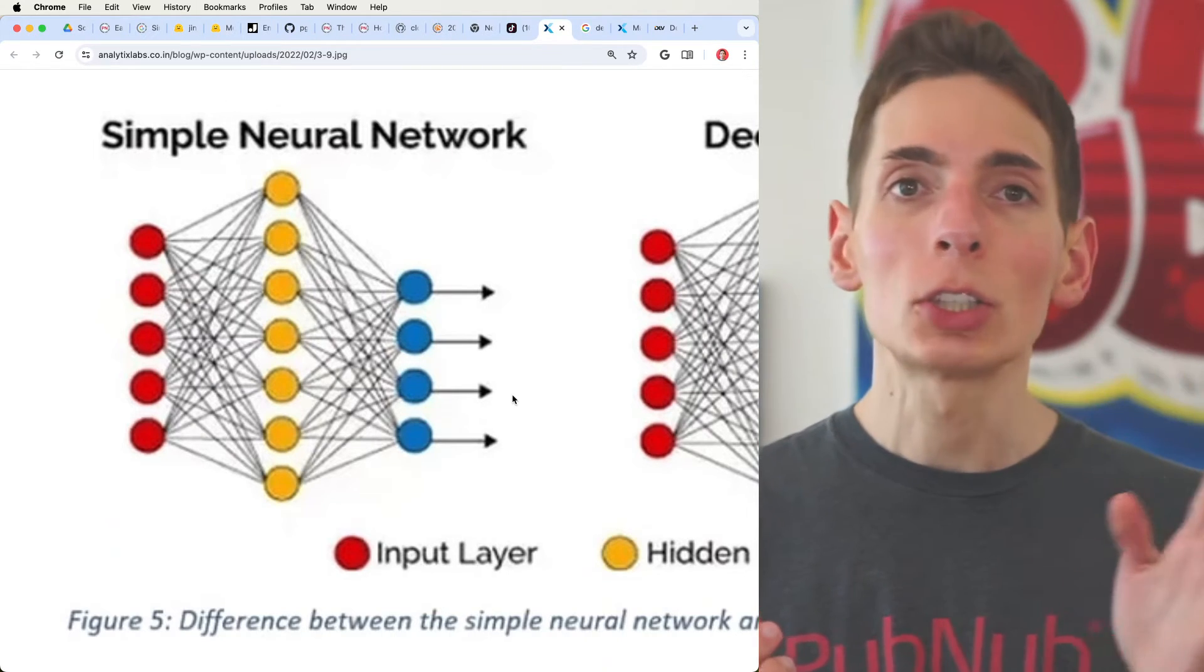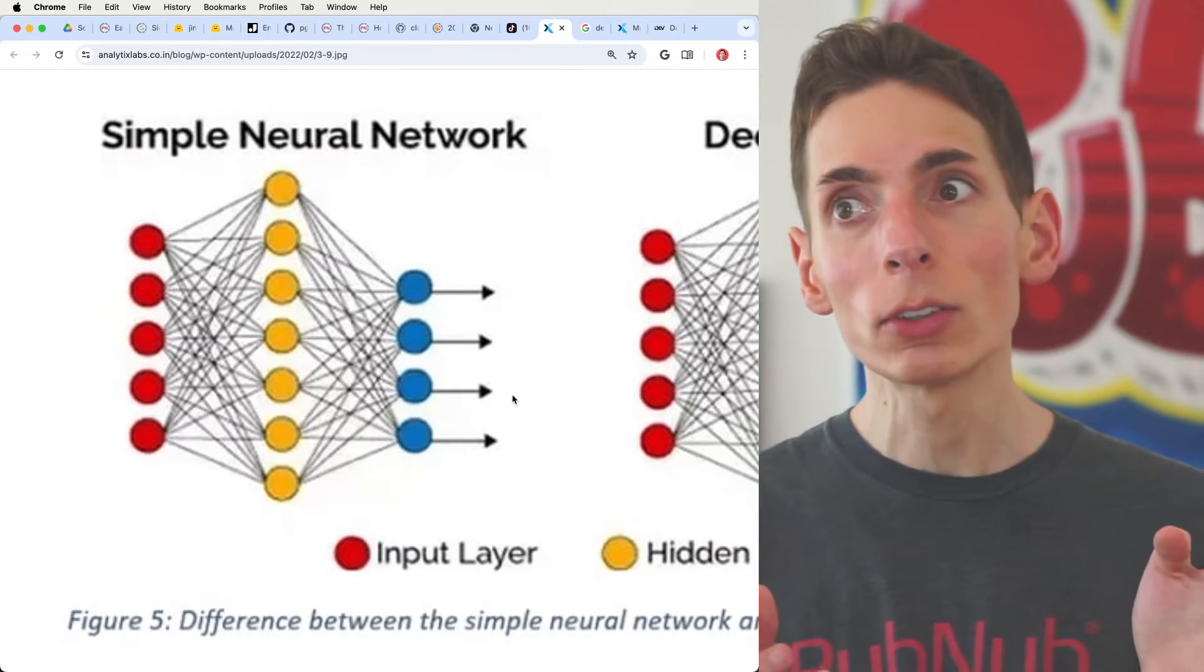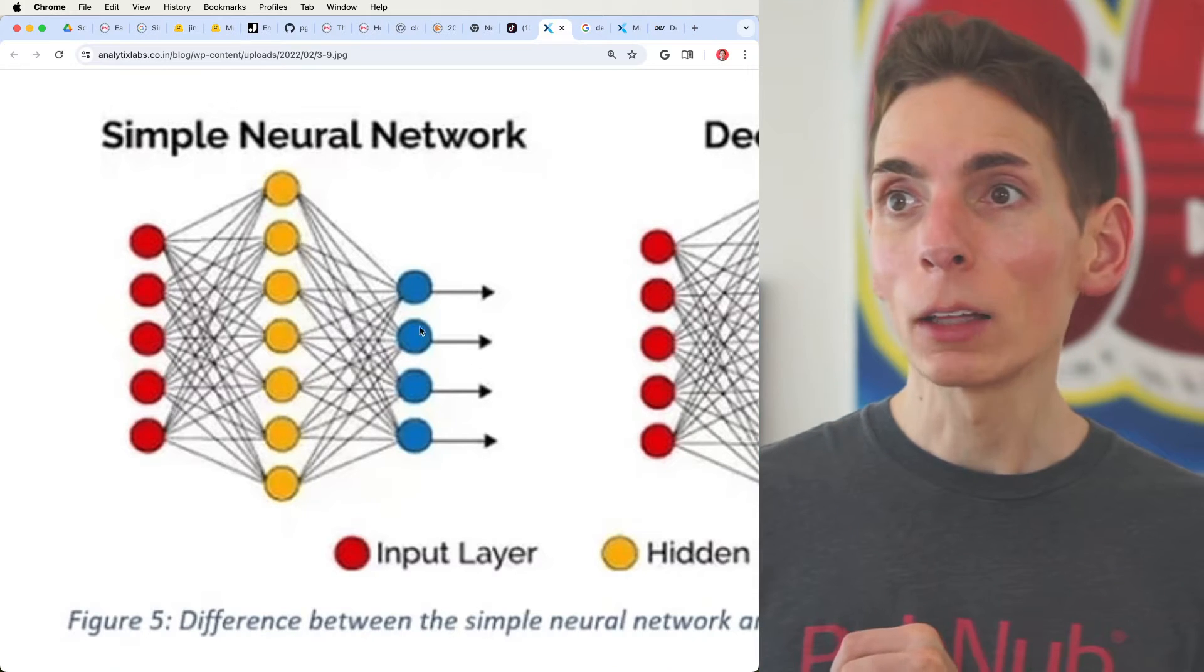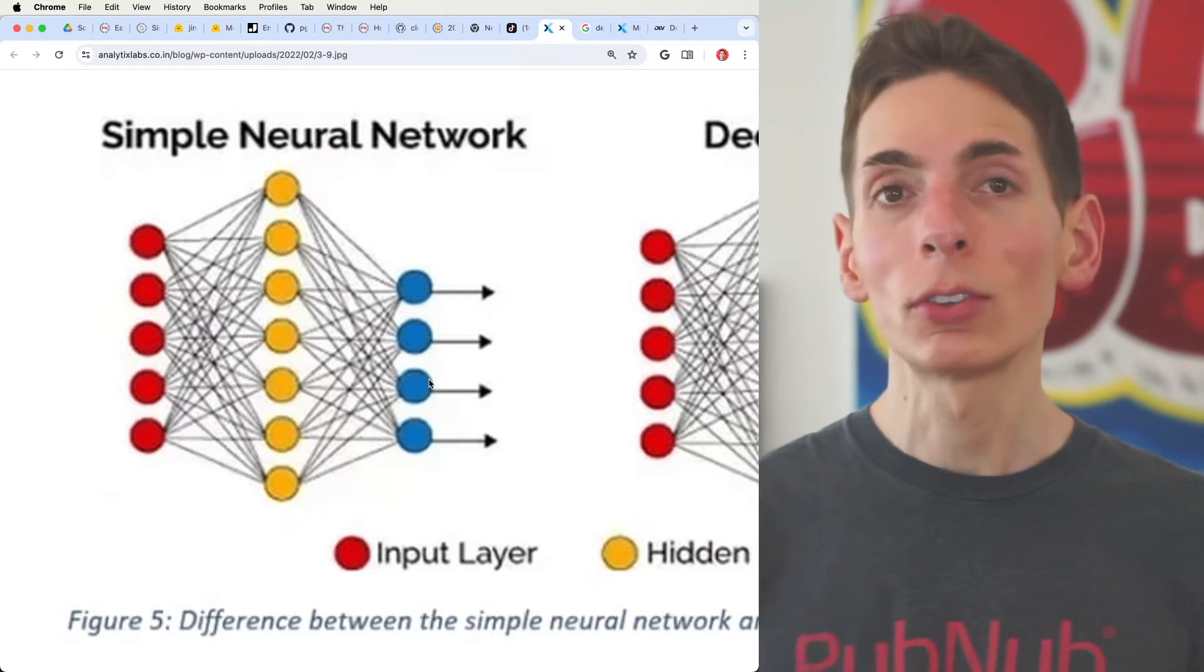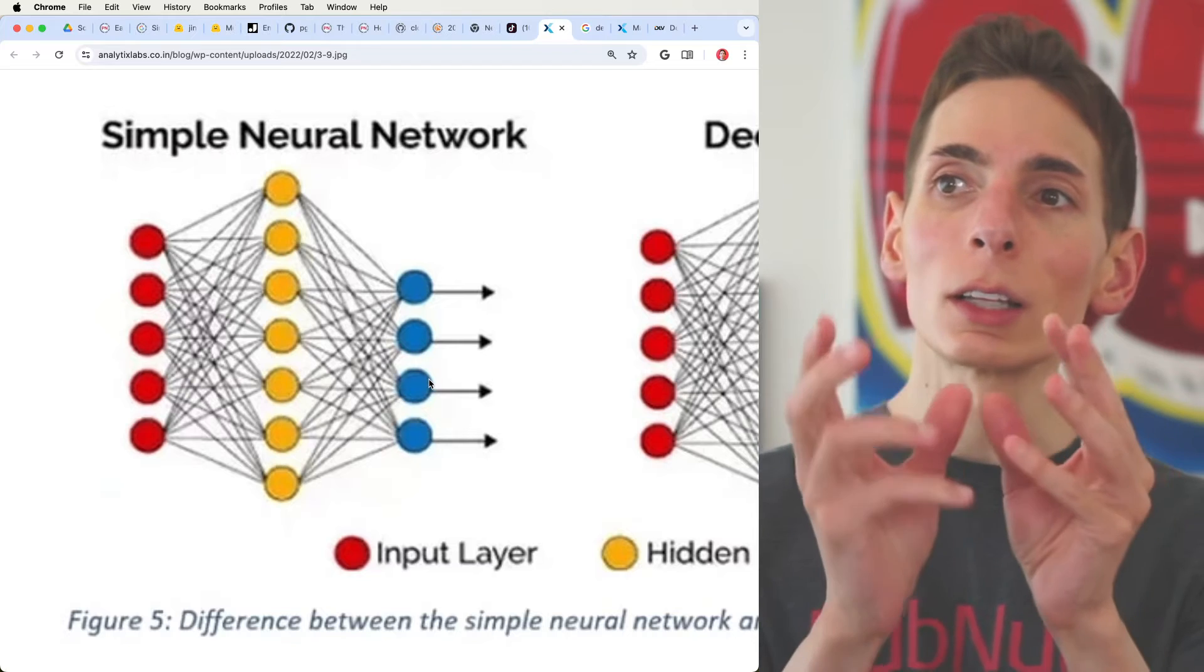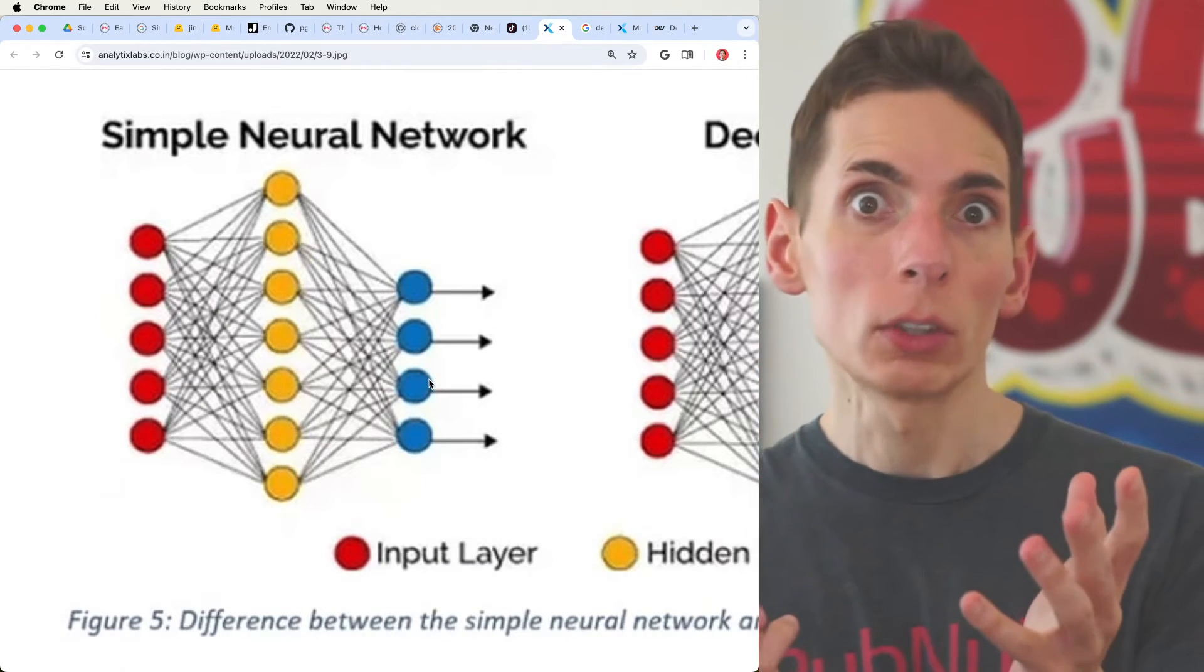For example, something like ChatGPT has 10,000 output elements in their layer. Their matrix is the size of 10,000 elements, and that gives you the next likely word essentially.